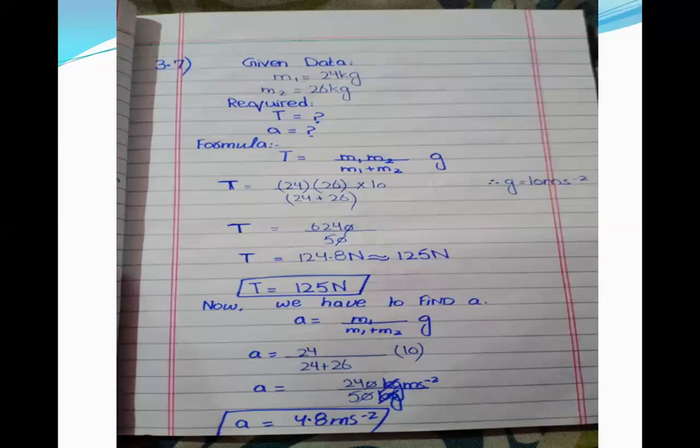For acceleration, the formula is a equals m1 divided by (m1 plus m2), multiplied by g. Using the given values of m1, m2, and g equals 10, the acceleration is 4.8 meters per second squared. This is numerical 3.7.